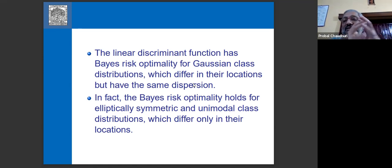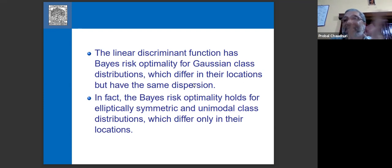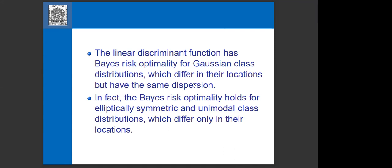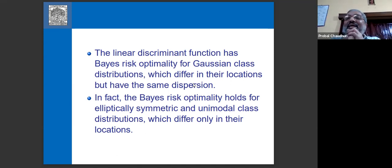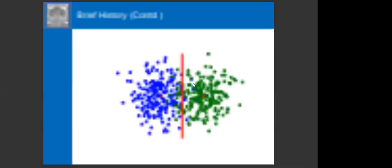This is the end of the first part. Historically, Fisher got the linear discriminant function by maximizing the t-statistic, not from Bayes' classification. You take a linear combination of the variables — call it Z — then look at within-group and between-group variation for Z, take the ratio, and maximize it. That gives you the linear function with maximum between-group variation compared to within-group variation. It's essentially an application of the Cauchy-Schwarz inequality — nothing more than that.